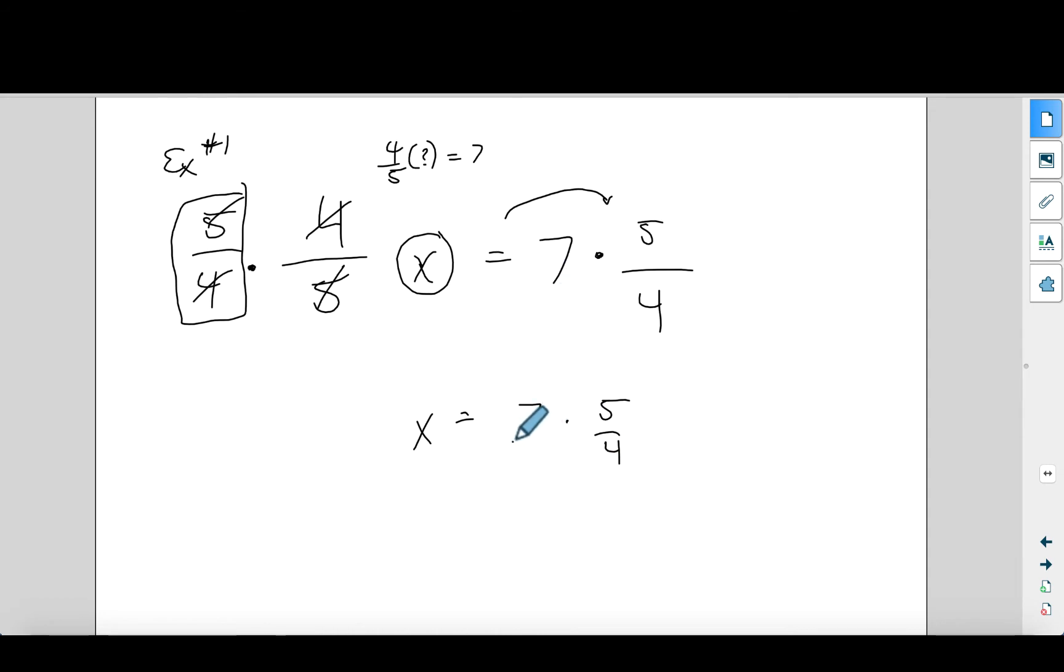So x equals seven times five over four. This seven is literally seven over one. So what is seven times five? That equals 35 over four. So x equals 35 over four. Now, you can change that into a mixed number. That's fine. But this is sufficient. We found out what x equals. Now, let's look at example one.